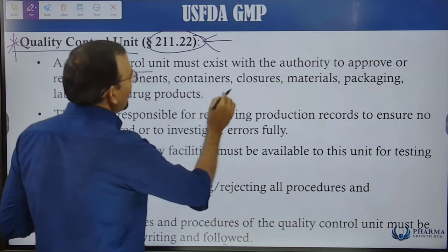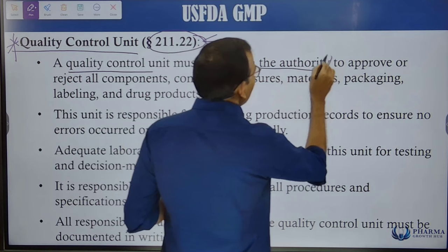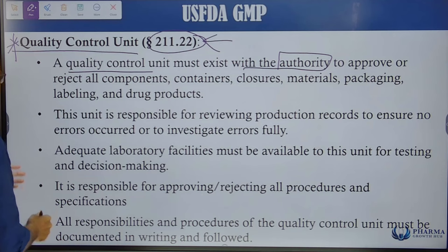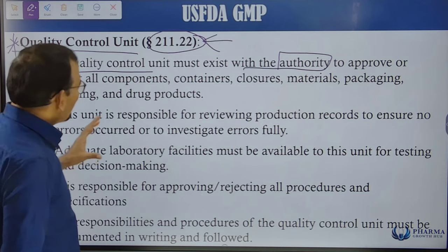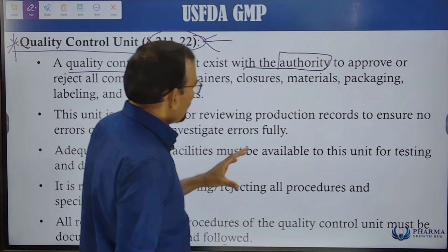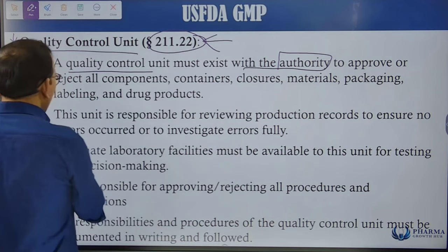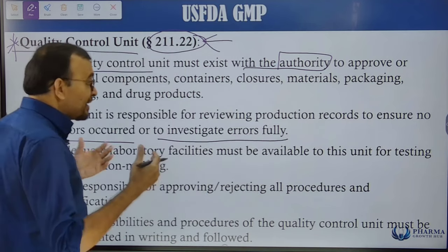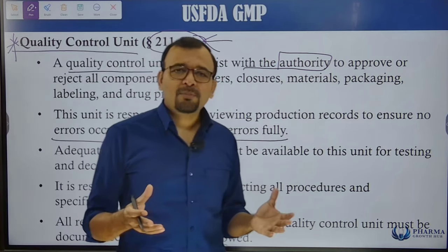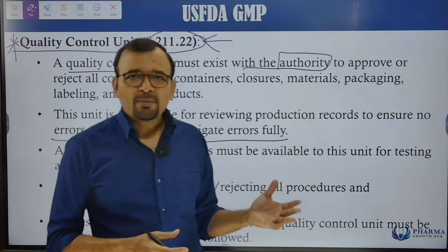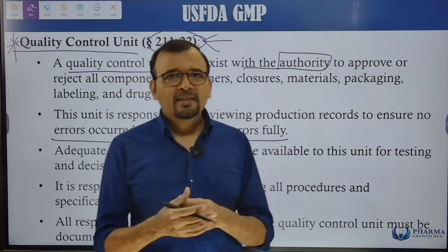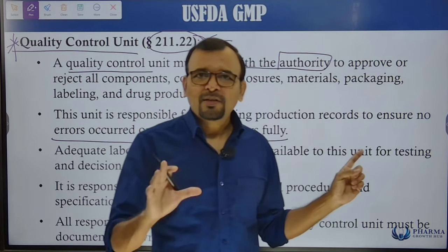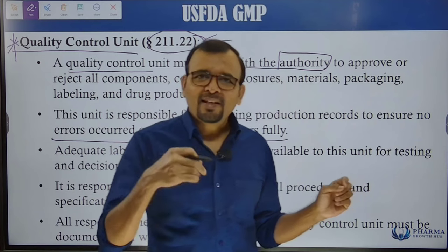The Quality Control Unit must have the authority to approve or reject testing materials. This unit is also responsible for reviewing production records to ensure no errors occurred, or to fully investigate any errors. If there is an investigation in progress, the QC unit has the authority to retrieve manufacturing documents for review.